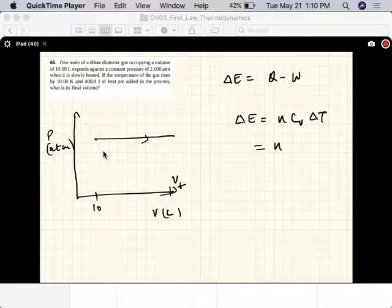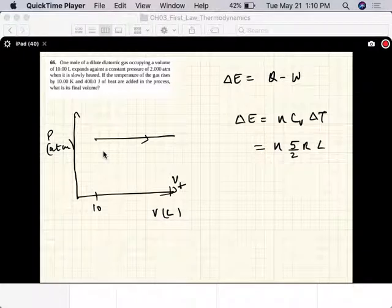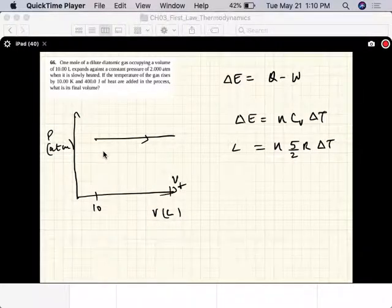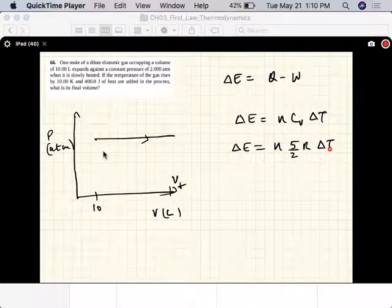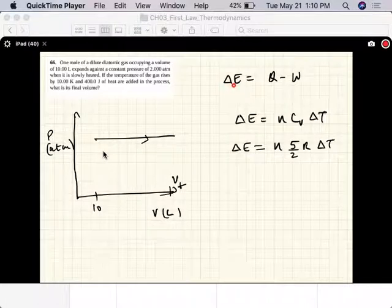C_V for this diatomic gas is five halves R Delta T. So we know n, we know R, we know Delta T, so we know this.